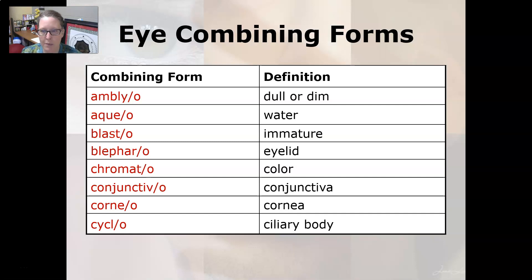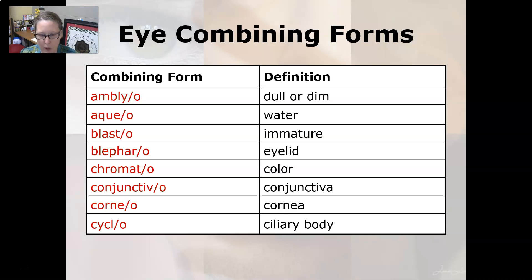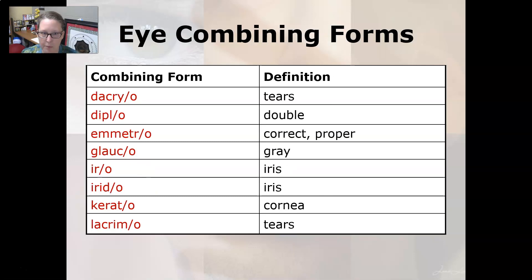Amblyo means dull or dim. Aqueo means water. Blasto means immature. Blepharo means eyelid. Chromato means color. Conjunctivo means conjunctiva. Corneo means cornea. Cyclo means ciliary body. Dacryo means tears.